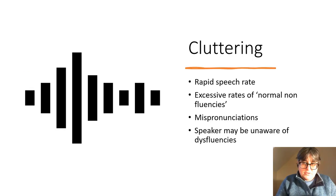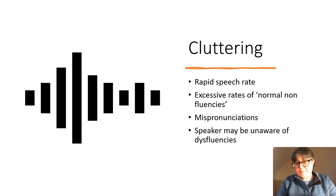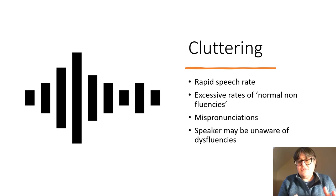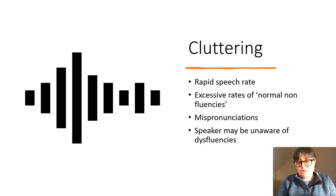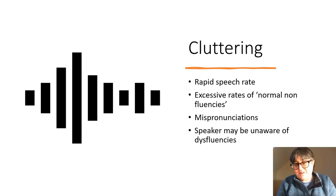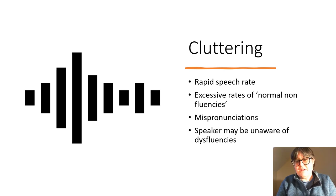Now I'll go into cluttering, which is probably not as well known as stammering. This is characterised by a rapid speech rate — though not everybody who speaks rapidly is cluttering. Again, it's the extent to which it deviates from the norm. There may be excessive rates of normal non-fluencies, fillers, tripping over words, and mispronunciations. All of these things can be found in so-called normal speech, and the speaker may be unaware of the disfluencies as they occur.